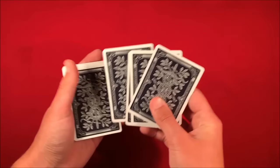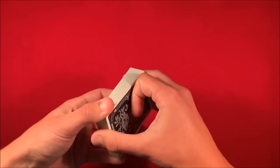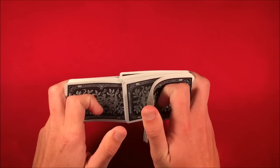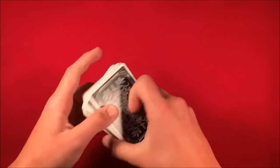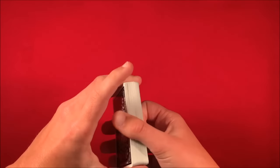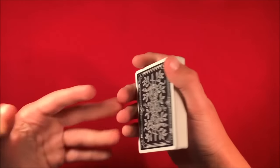So from here you can just do like a riffle shuffle and you can leave like the top five cards on top of the deck. This way they don't get mixed up and the spectator also thinks you're mixing up the deck.